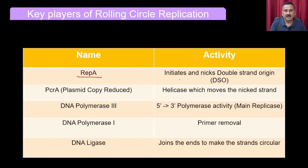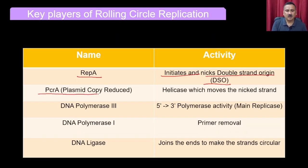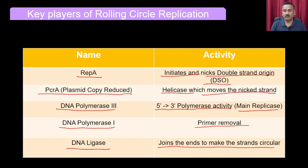The key enzymes in the rolling circle model are: Rep A, which initiates and nicks the double-stranded origin (DSO); PCRA (plasmid copy reduced), a helicase that moves on the nicked strand; DNA Pol 3, which has 5' to 3' polymerase activity and acts as the main replicase; DNA Pol 1, which removes the RNA primers; and DNA ligase, which joins the ends to make the strand circular.